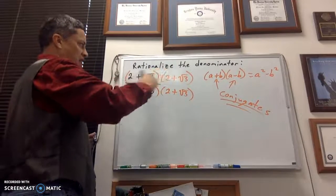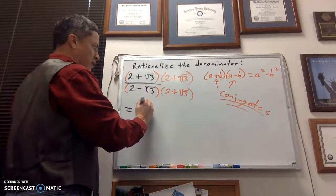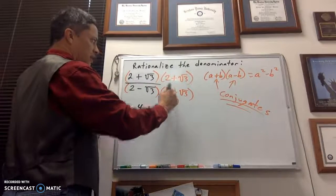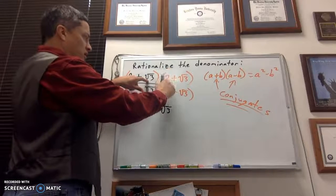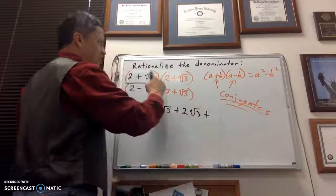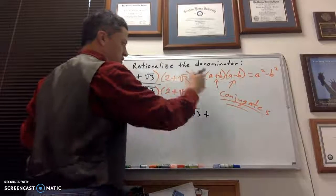Numerator. First outer inner last. So, 2 times 2 is 4. 2 times the square root of 3 is 2 times the square root of 3. Outer is the square root of 3 times 2 is 2 root of 3. The last would be the square root of 9, right? The square root of 3 times the square root of 3.